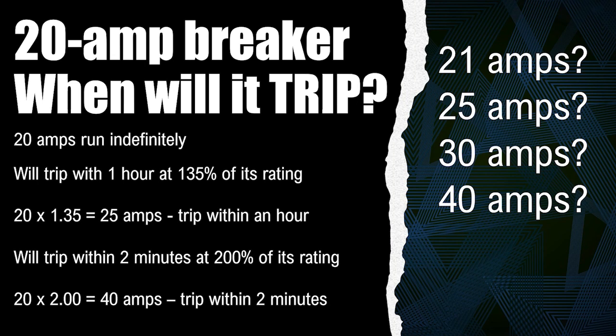Which makes sense — if we've got this very large current and it's just going to be for just a moment, maybe the startup of a motor, we don't want it to trip right away. What if your microwave fluctuates up for just a minute, then it comes back down? We want to be able to use our products without it being a nuisance all the time. Because if a product was a nuisance, a customer will just put a larger fuse or a larger breaker in there, and then we have a hazard.